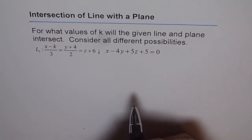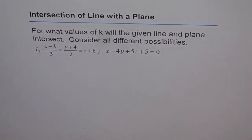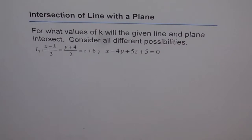Let's first analyze the line and the plane. If the line is parallel to the plane, it may not intersect. If the line is on the plane, it will intersect at all points. And if the line is not parallel to the plane, it will go through it and there will be a single point of intersection. So these are all the different possibilities.